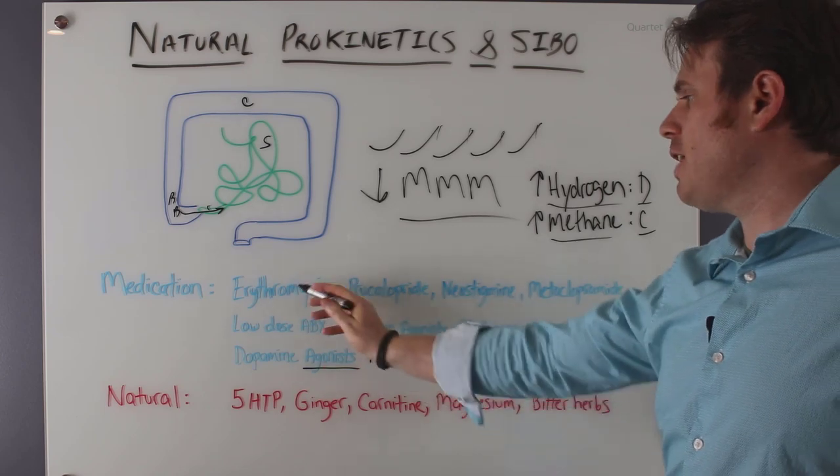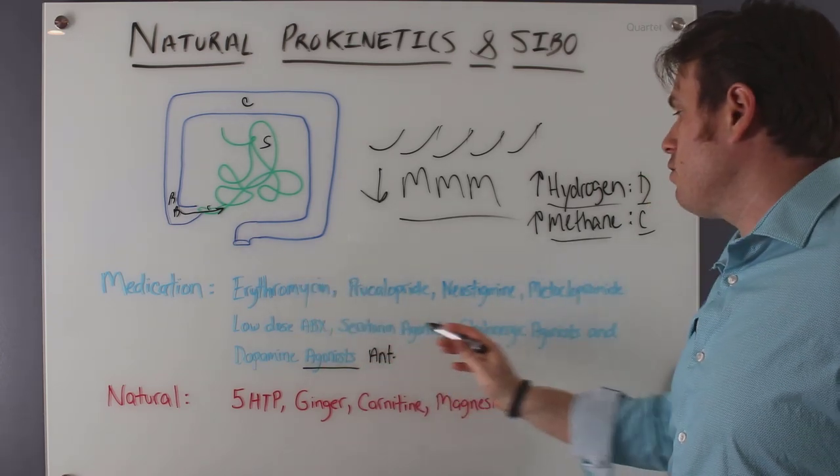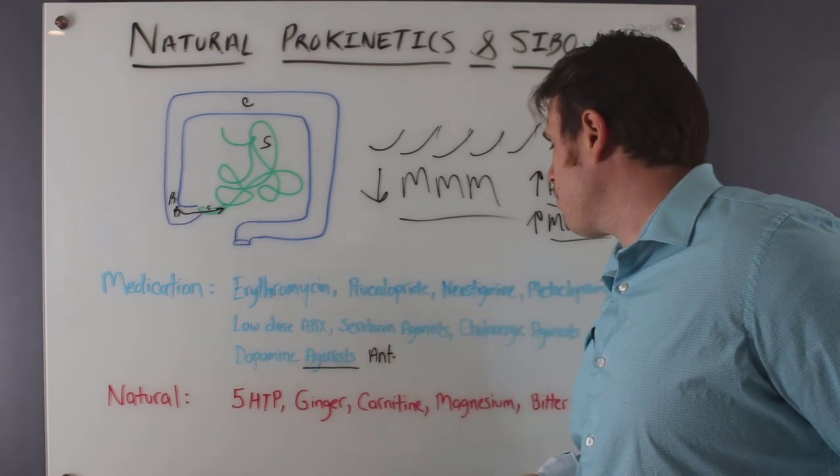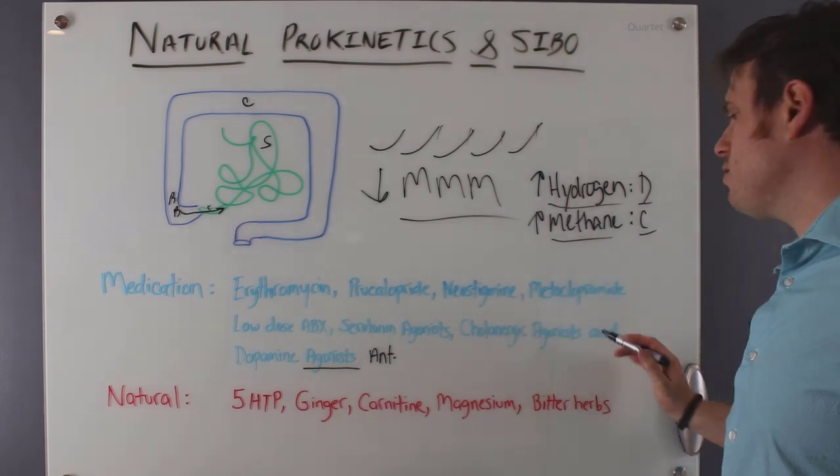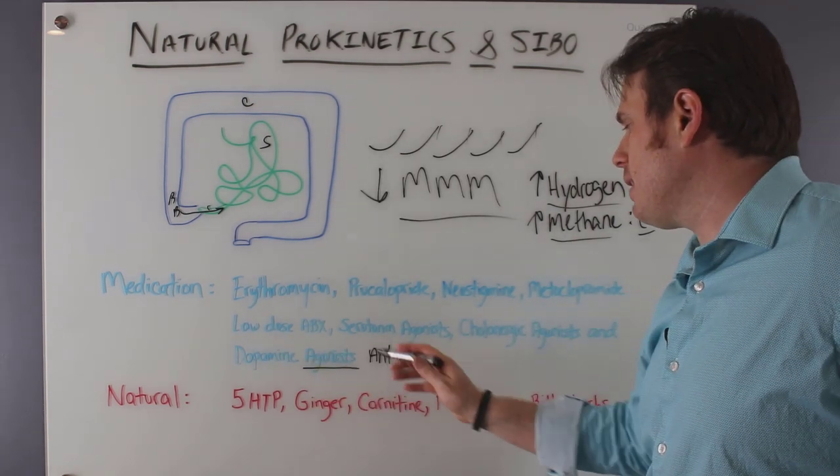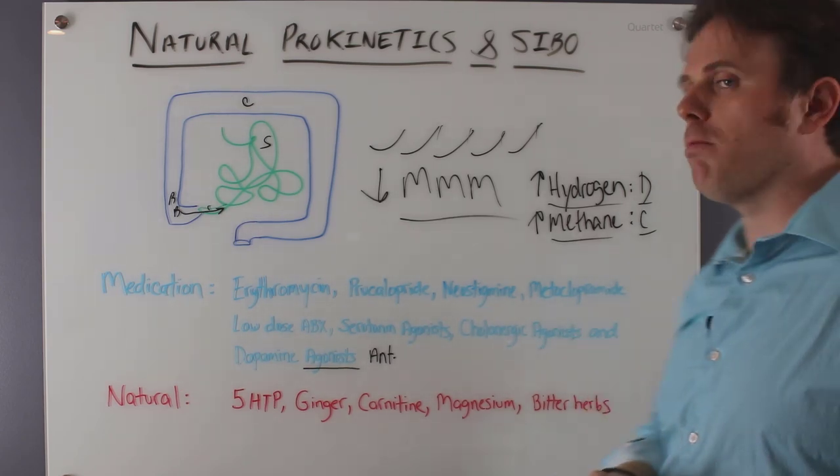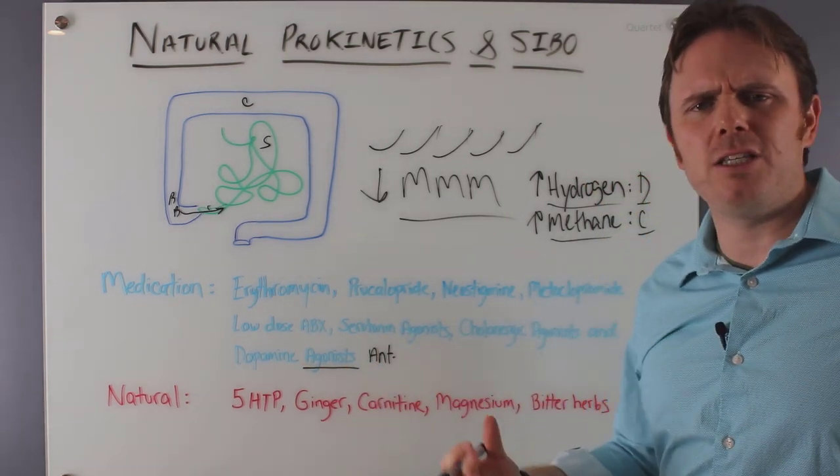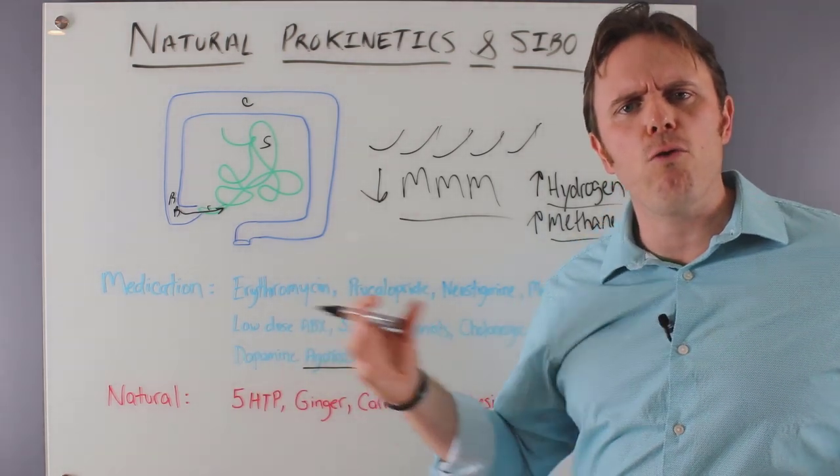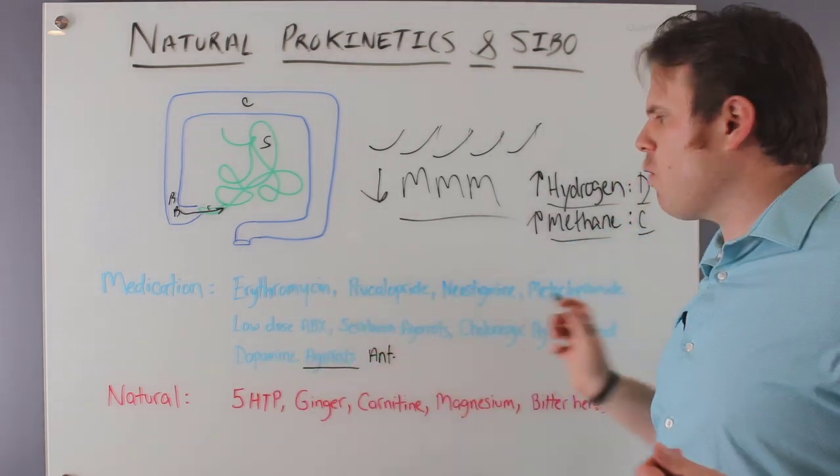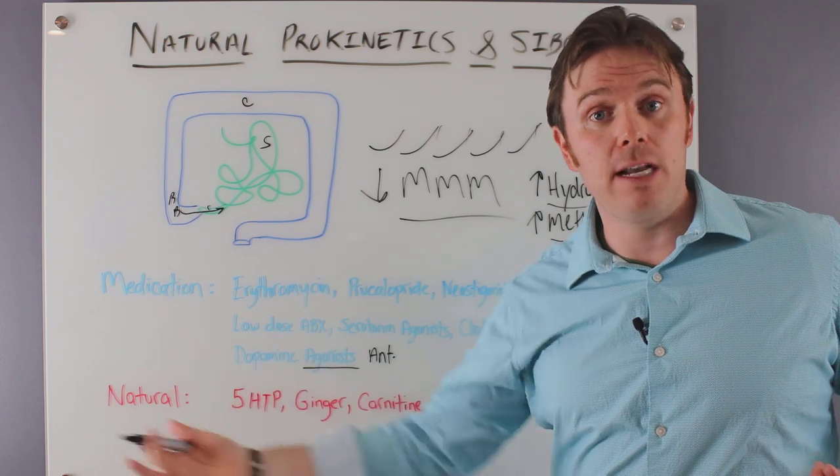All right. So low-dose antibiotics with the erythromycin. The serotonin agonist is going to be the prucalopride. The neostigmine will be the cholinergic agonist. And the dopamine antagonist will be the metoclopramide. Those are the medications that are commonly used. There's some other trade names out there for them, but just kind of giving you the rundown of what they look like on the conventional medical side.